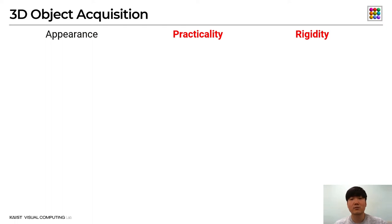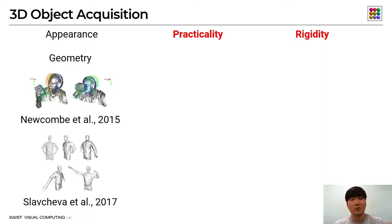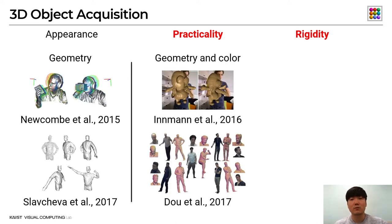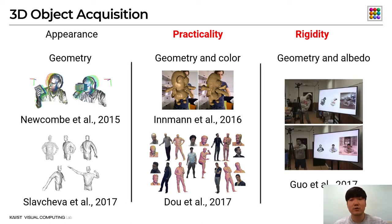Recently, fusion-based approaches have been proposed to capture the geometry and appearance of a moving object with a practical setup using a single RGB-D camera only. Newcomby Error and Slavaceva Error capture the geometry of a moving object by estimating its motion field. Inmar Error and Doe Error improve the quality of captured geometry and appearance by enhancing motion accuracy by means of color information. Newcomby Error captures geometry and diffuse appearance of a moving object under unknown lights, with progressive optimization enhancing quality. However, none of these works can acquire spatially-varying BRDF of a moving object.